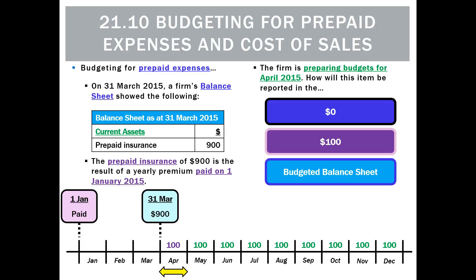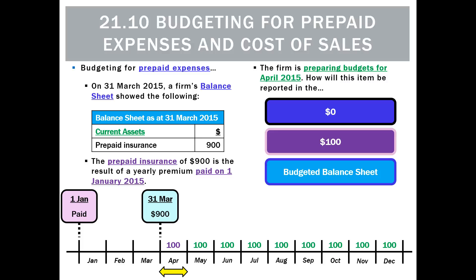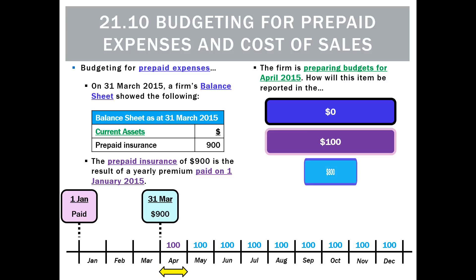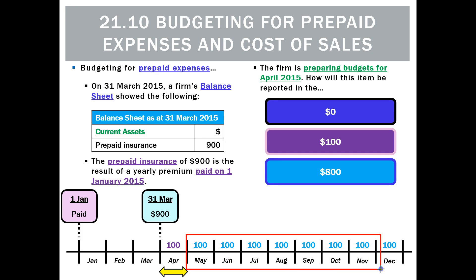In the balance sheet, what will we list as our current asset in the budgeted balance sheet at the end of April? It's going to be $800, because at that point in time there are going to be eight months remaining, and there's $100 left for each month — so that is $800.